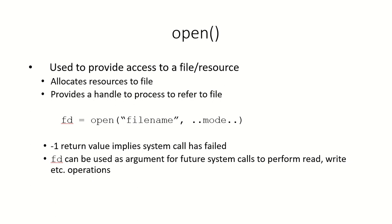In this video we are going to take a look at a few system calls. One of them is open. This system call is used to provide access to a file or a resource. So if there is a process and it wants to open a new file or it wants to access a particular resource, it will send this request to the kernel by means of this particular system call.